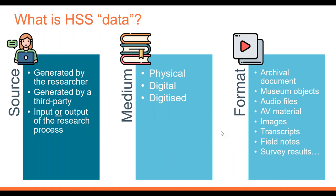In terms of medium, we often think about research data as being digital, but it could equally be physical, particularly in a humanities and social science context. You might be working with physical materials, digital materials, or digitized materials — something that was physical and now has a digital copy. In terms of format, there's a really wide range: archival documents, museum objects, audio files, audio-visual material, images, transcripts, field notes, survey results. It really depends on the research method you're using, but we would take a very inclusive view of what counts as research data.